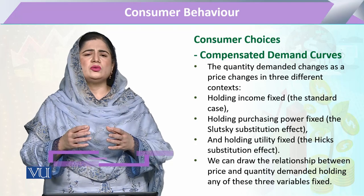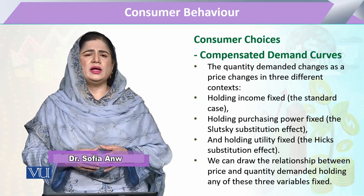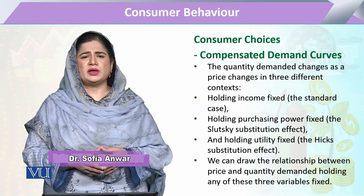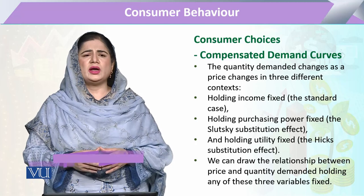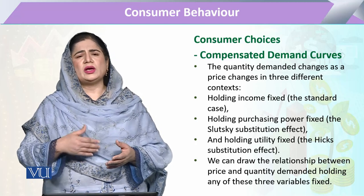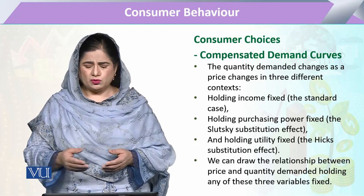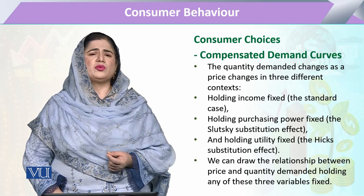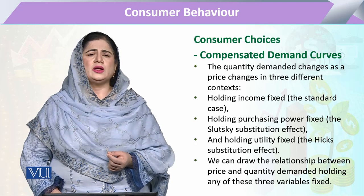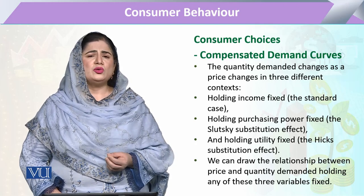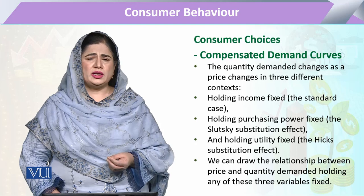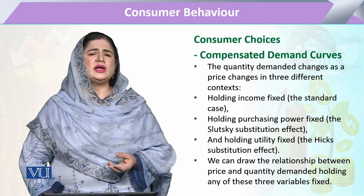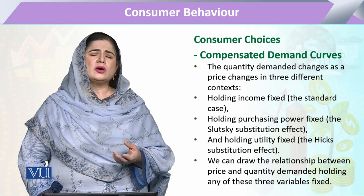We are going to assess what will be the change in quantity demanded due to a change in price. To solve this problem we have more than one approach. One method is the Marshallian approach, where there will be no change in nominal income — meaning whatever the price change, the utility level of the consumer is kept constant.